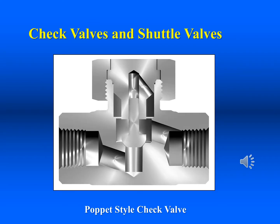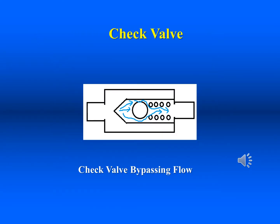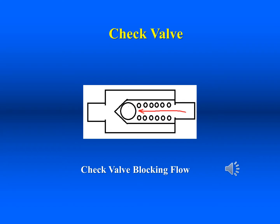Check valves block fluid flow in one direction, much like a diode blocks electrical flow in one direction. Their primary function is to provide a path of free flow around a device when the function of that device is only needed in a single direction. The most common movable members used in check valves are steel balls and poppets. In free flow, the fluid pushes the movable member against a light spring and flows around it. In blocked flow, the fluid moves in the direction which forces the movable member against a seat, causing it to choke off fluid movement.